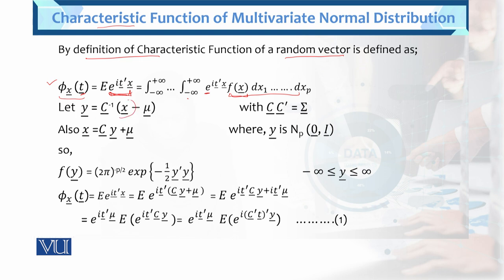Let y equal to C prime (x minus mu). Finding the value of x: x equals C prime inverse on that side, so x equals C y plus mu, where C C prime equals the variance-covariance matrix sigma. Here y is distributed as standard multivariate normal with mean 0 and variance identity, as we learned before.